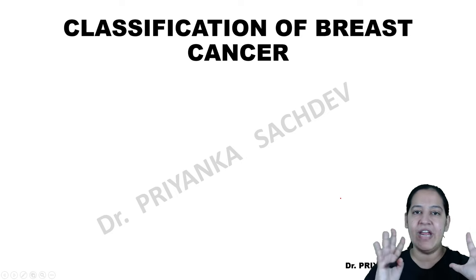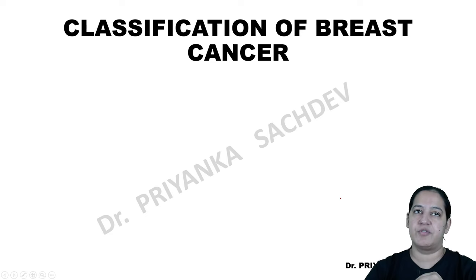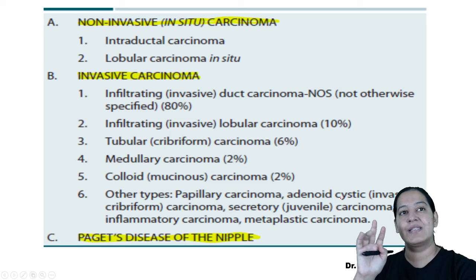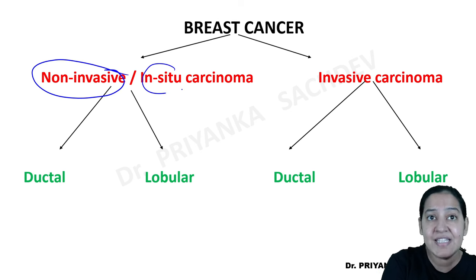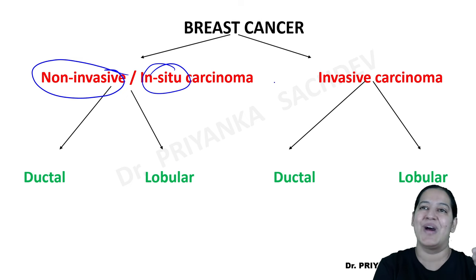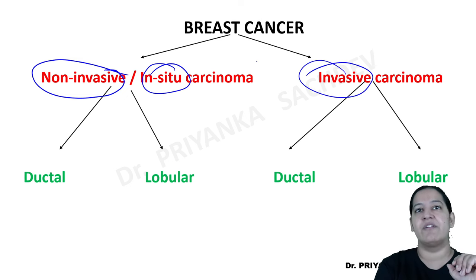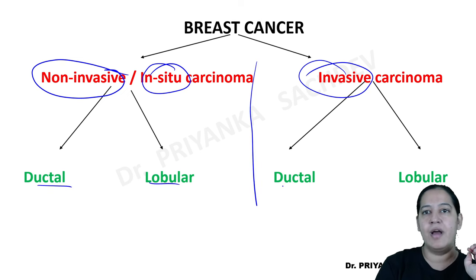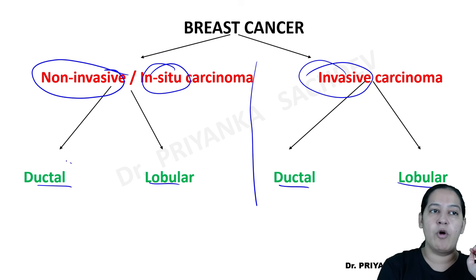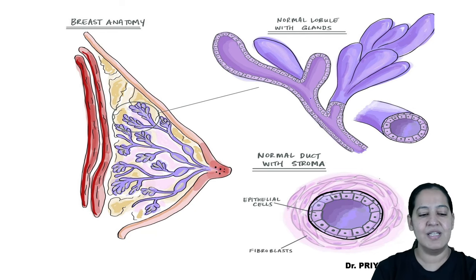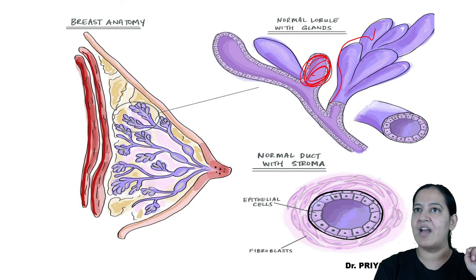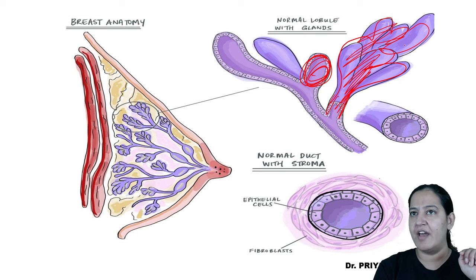Coming on breast cancer. That was a brief introduction about the anatomy and normal histology of the breast. Breast cancers are of two types: non-invasive and invasive. Non-invasive breast cancers are also known as in-situ — it is known as in-situ carcinoma. Each of them again has two types: ductal and lobular. If carcinoma is involving a duct, it is ductal. If it is involving a lobule, it is lobular.